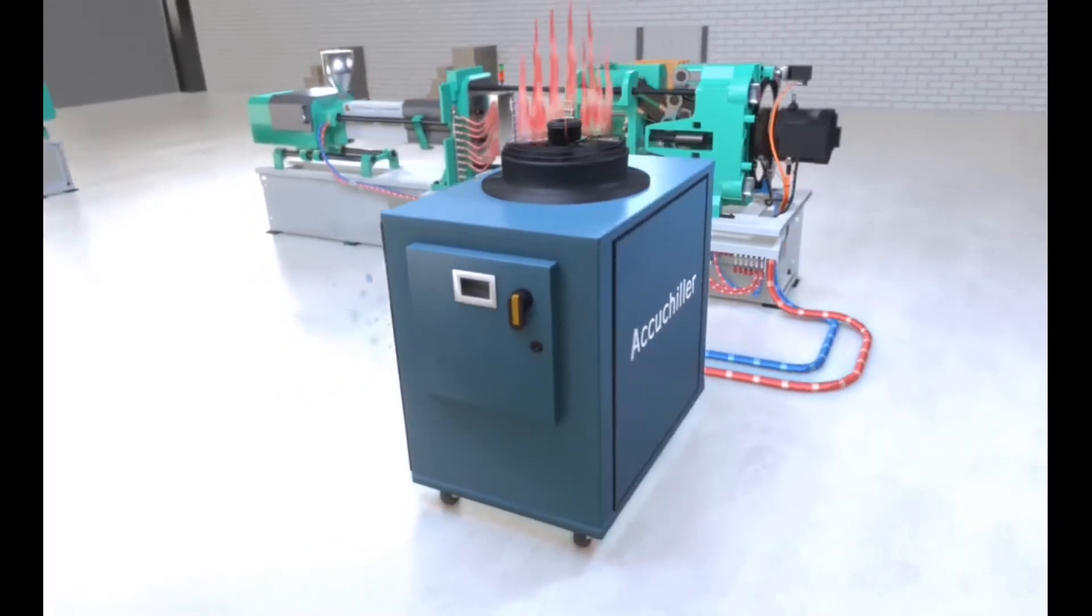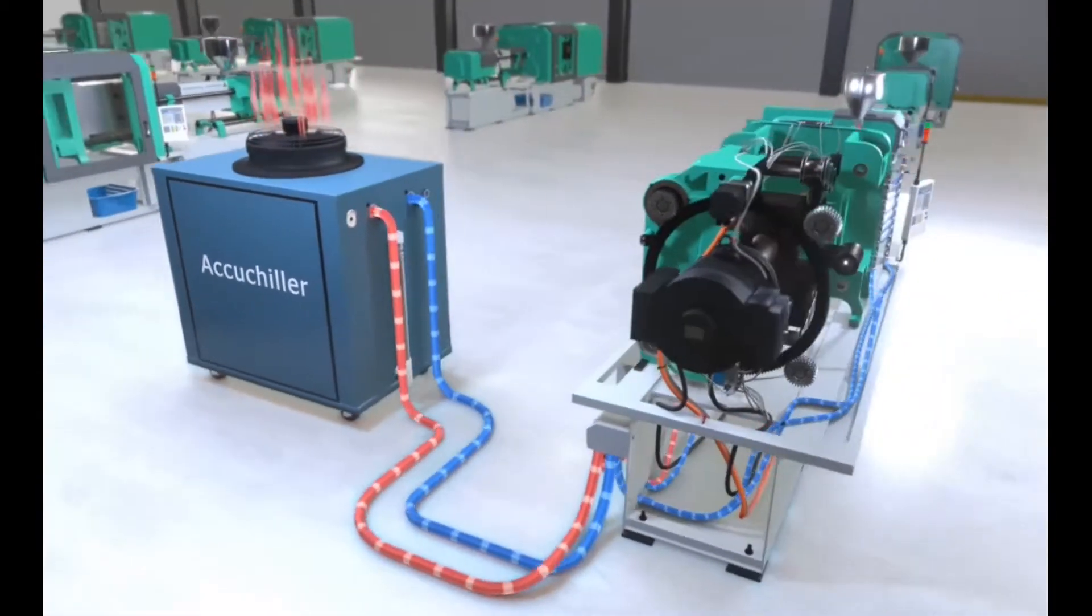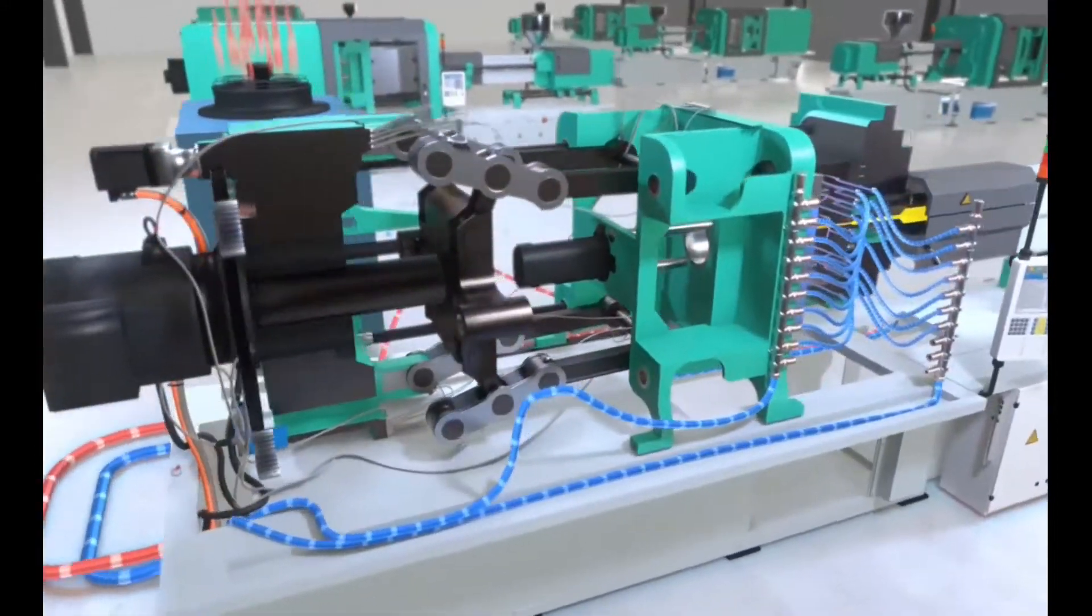Let's look at this pathway of heat in more detail, starting with the chiller or mold temperature controller, and moving to the molding machine and the mold.